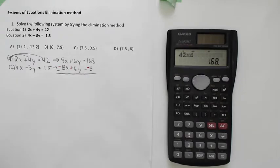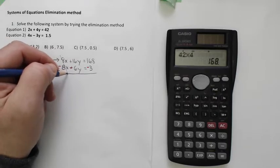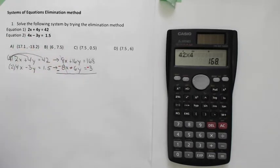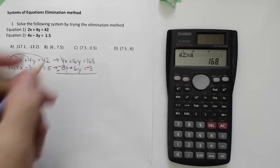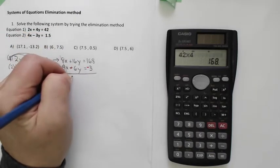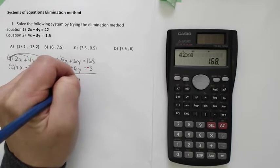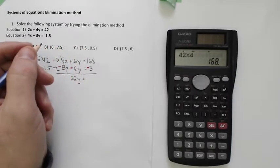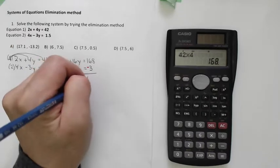So when we do that, we've eliminated that, leaving me with 16y. Sorry, I had originally minus 6y. Now I've got plus 6y. So 16 plus 6 is 22y. So 16y is equal to 168 plus negative 3 is 165.